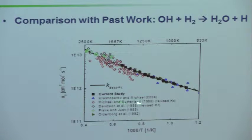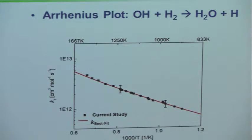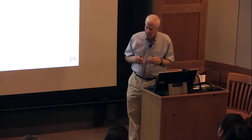Michael and Sutherland used atomic resonance (ARAS) techniques. Davidson was also in my laboratory. Those two were examples of the gold standard: direct determinations of rate coefficients. There's ignition delay time, which depends on lots of reactions, modeled using detailed mechanisms with specific rate coefficients. The best experiment is one like this. Above about 1200 K, you really can't use flow reactors anymore, so we're in the shock tube domain.